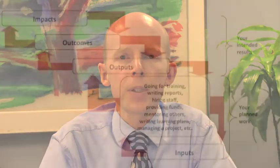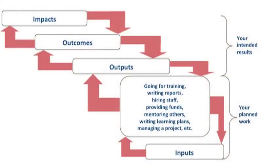We can then use a needs assessment process to help us plan how this system fits together. What are the impacts that we want to accomplish? In order to accomplish those, what outcomes do we have to accomplish? In order to get those outcomes, what outputs do we have to accomplish? And then, what activities will accomplish those and what resources are necessary to support those activities? This is a general results framework or logic model approach to understanding what's going on within any organization, project, or program.